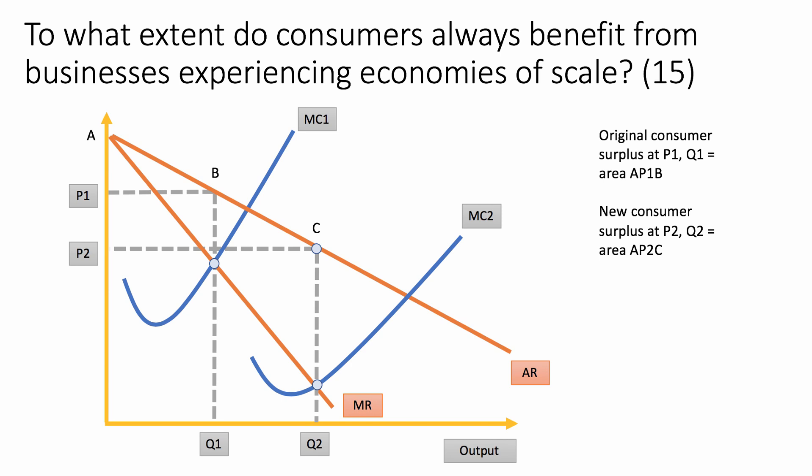Here's the diagram we're going to use for this one. I've taken out the average cost — I'm just going to look at the marginal cost curve. So economies of scale basically involves working from the set of cost curves MC1 to MC2. Now if firms can achieve that, they can increase their output from Q1 to Q2, and that can bring down the profit-maximising price from P1 to P2.